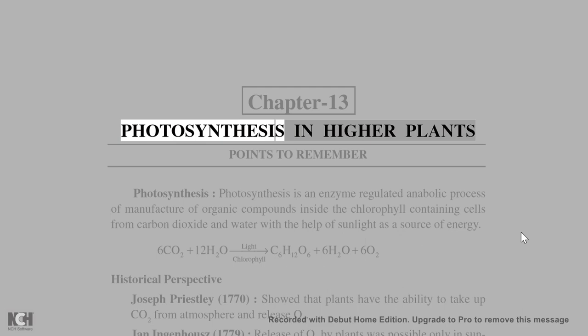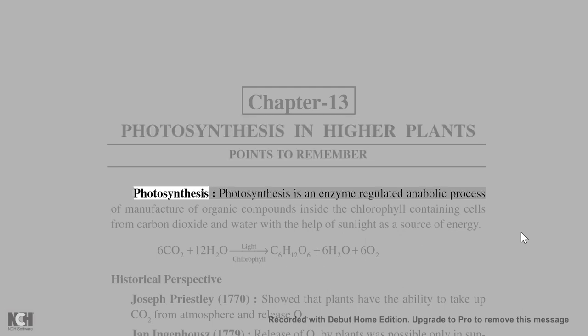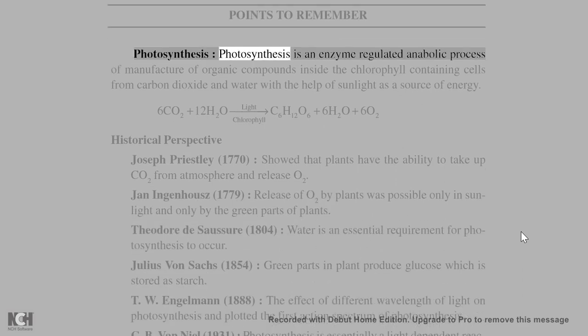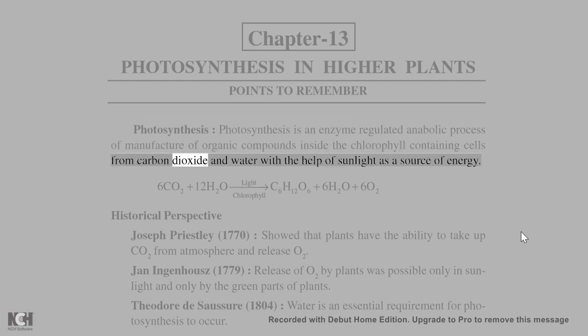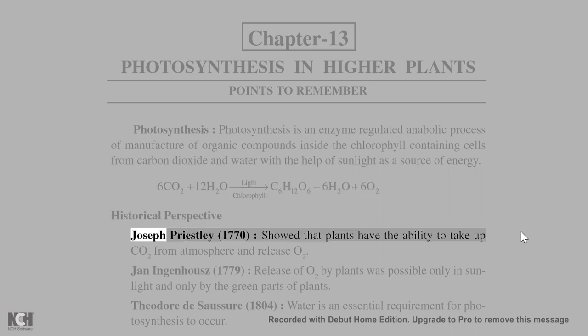Chapter 13: Photosynthesis in Higher Plants. Points to Remember. Photosynthesis is an enzyme-regulated anabolic process of manufacture of organic compounds inside the chlorophyll-containing cells from carbon dioxide and water with the help of sunlight as a source of energy. Light, chlorophyll: 6CO₂ + 12H₂O → C₆H₁₂O₆ + 6H₂O + 6O₂.